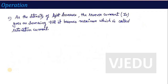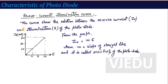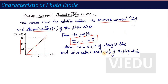If you increase the light intensity, the reverse current will increase, but at one point it becomes maximum — this is called the saturation current. The characteristic curve is called the reverse current versus illumination curve, showing the relation between reverse current and incident light. As illumination increases, reverse current increases linearly, given by the equation IR = ME, where M is the slope of the line, also called the sensitivity of the photodiode — indicating how much the photodiode responds to increasing light intensity.